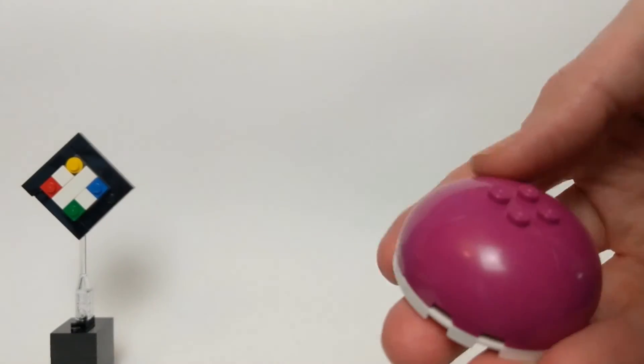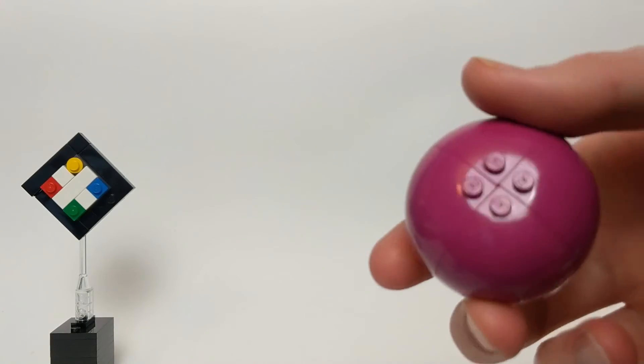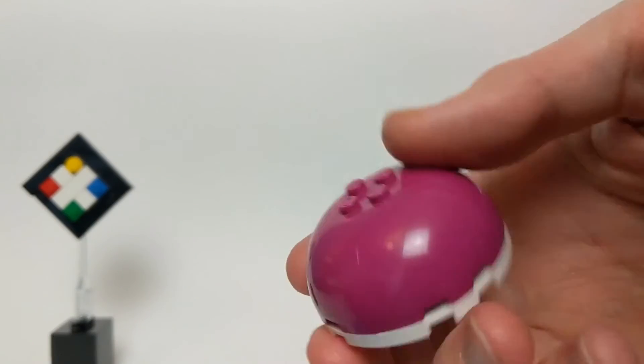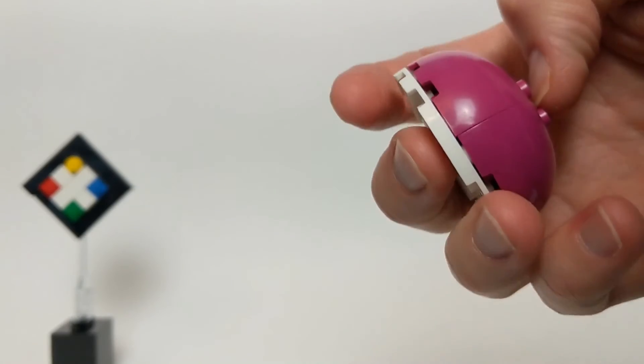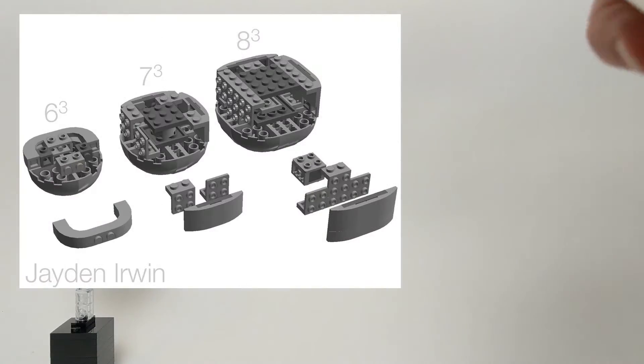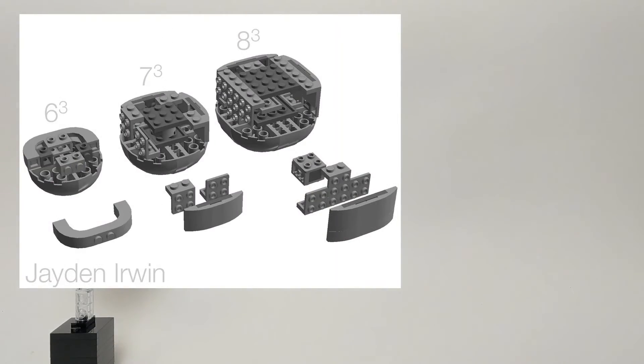Here too is another technique where you use SNOT tricks in order to incorporate those dome elements into a sphere by Jaden Irwin. A clever use of the rounded slopes and the SNOT bricks on the inside of the structure allows you to make two halves out of the dome shapes fit together in a fairly spherical-like shape.